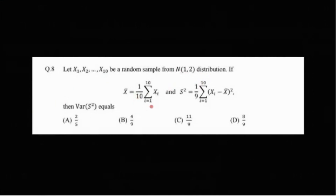Welcome to Chinta Statistics and Data Science. Today we are going to solve problem number eight from IIT JAM MS 2020. The problem says: let X1, X2, up to X10 be a random sample from Normal(1, 2) distribution. X-bar equals (1/10)·Σxi for i=1 to 10, and S² equals (1/9)·Σ(xi − X-bar)² for i=1 to 10. Then what is the variance of S²?